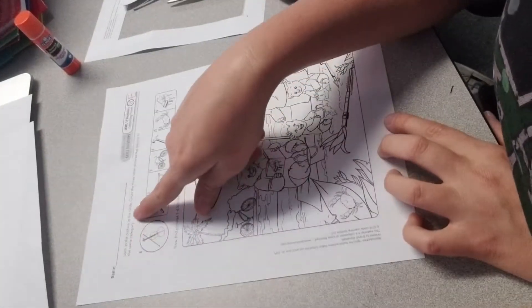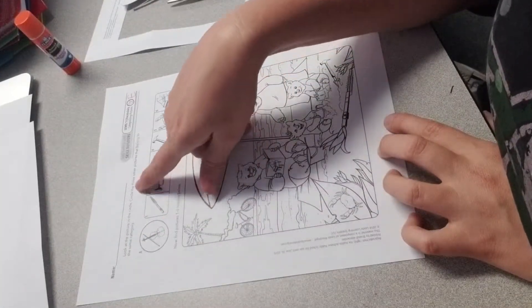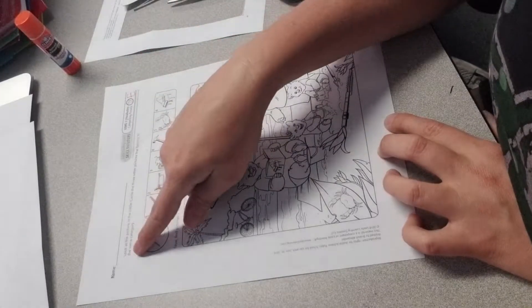We want to look at the picture in the circle and circle the three other pictures that belong to the same category.